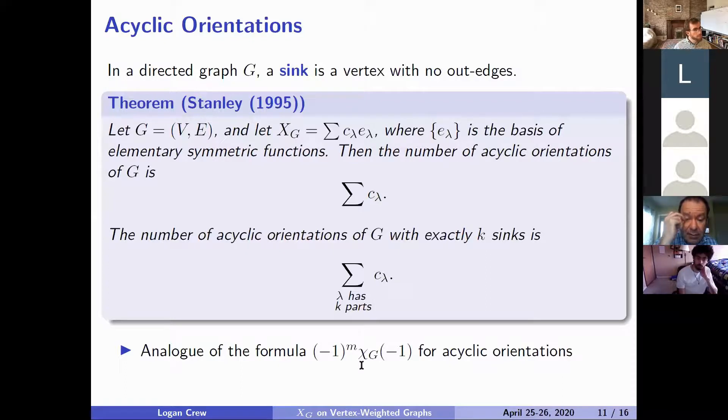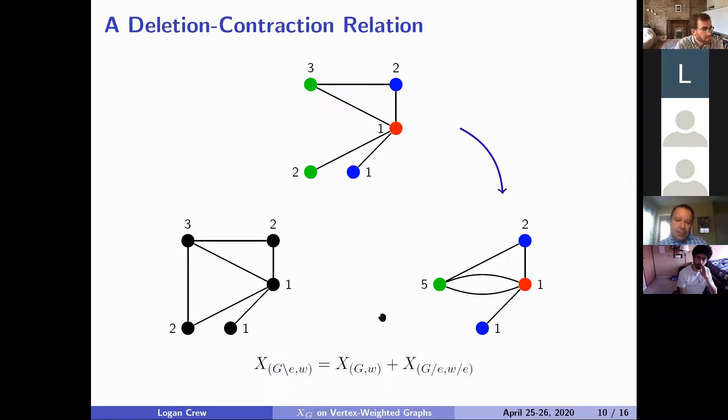What the chromatic symmetric function does that's stronger is you can sum the c_λ over those lambda with k parts. So lambda here is an integer partition meaning that it is a sequence of non-increasing positive integers.